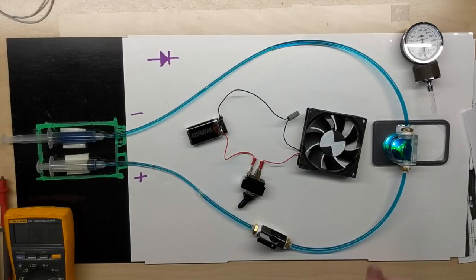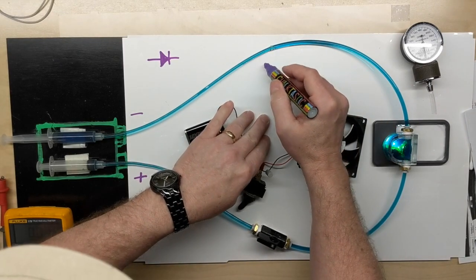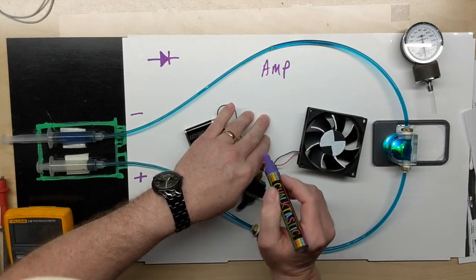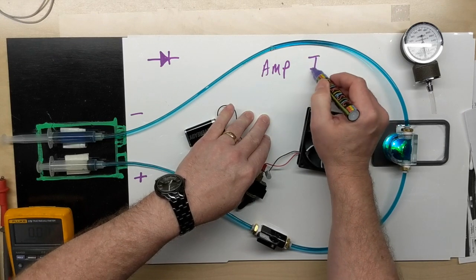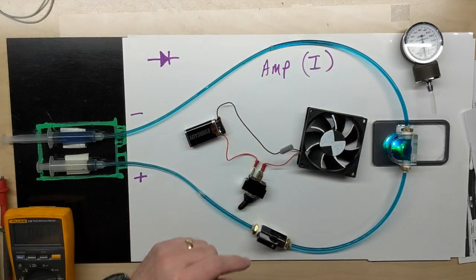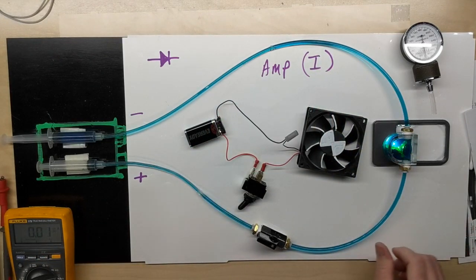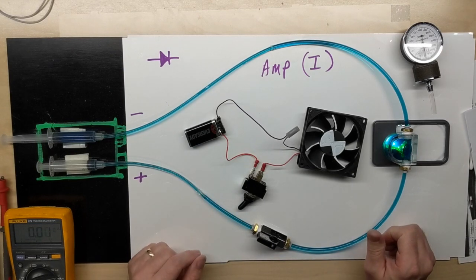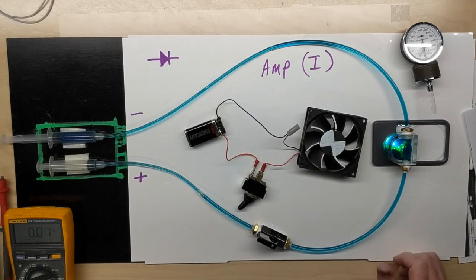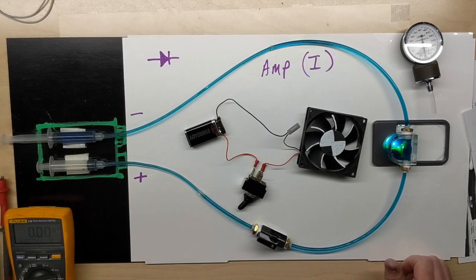The conventional symbol for current, we call current an amp for short, and the symbol is usually I. We'll get into that later more with Ohm's Law. But when we talk about an ampere or amp, we're talking about a flow. And how do we measure it?